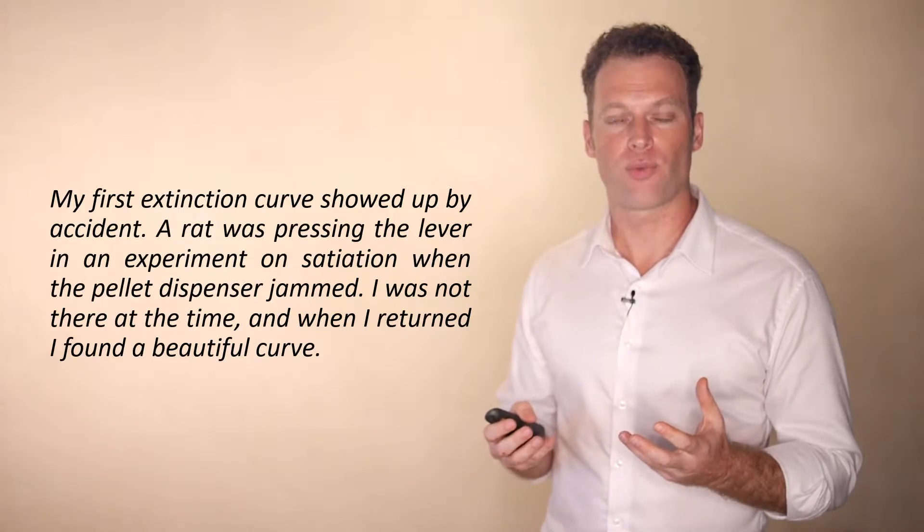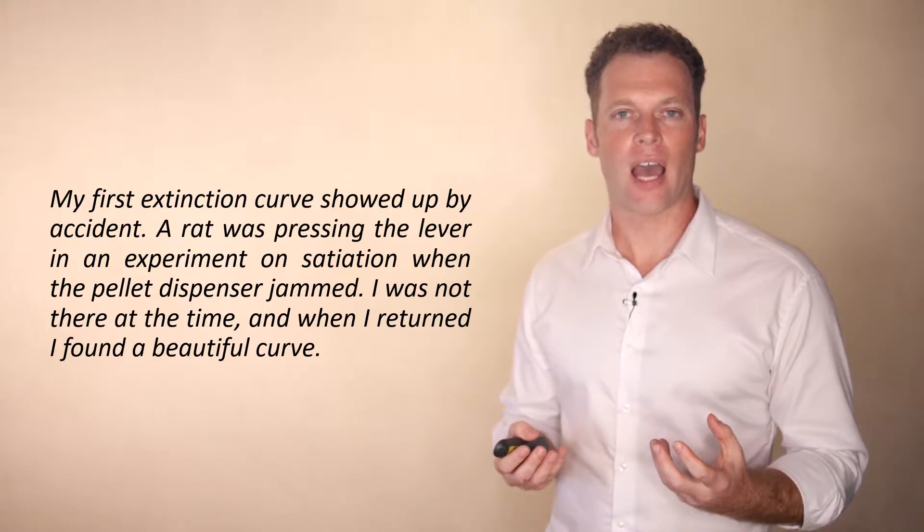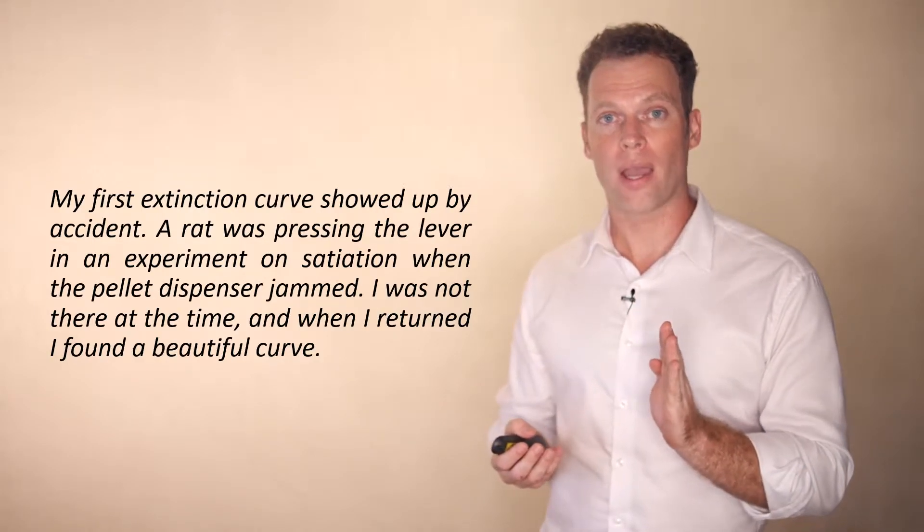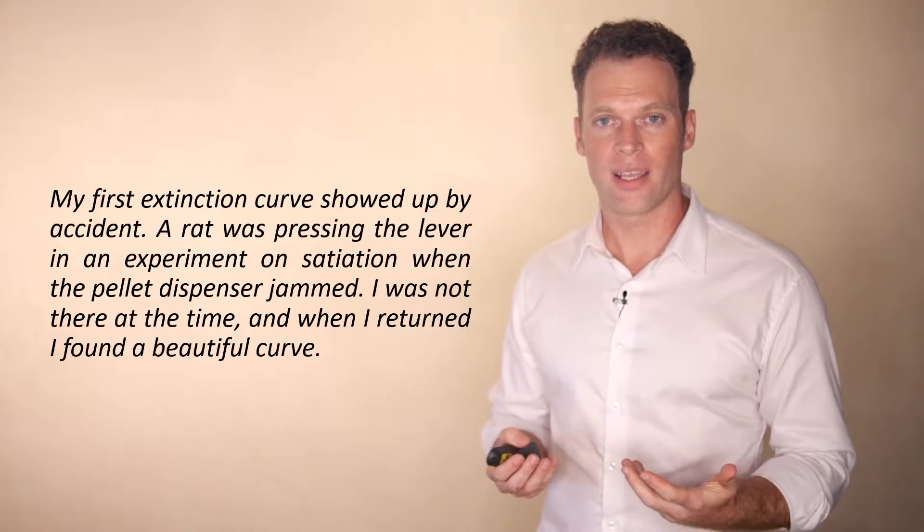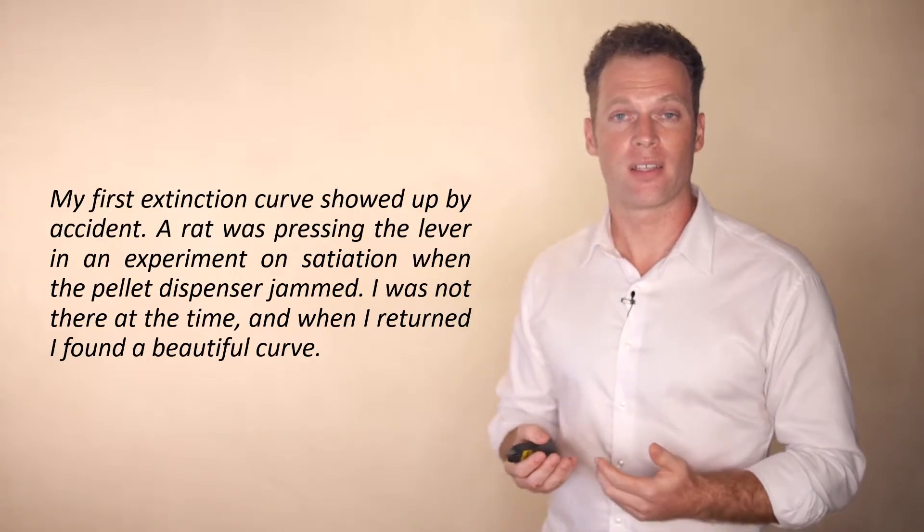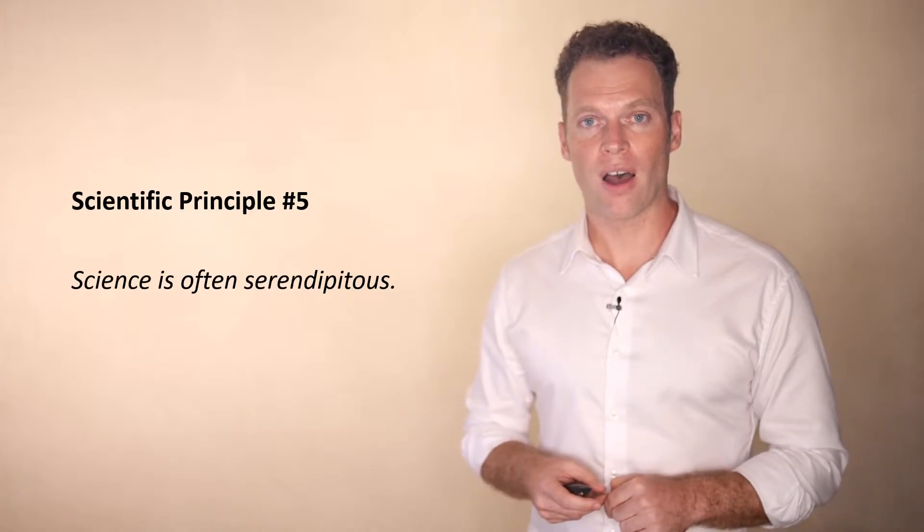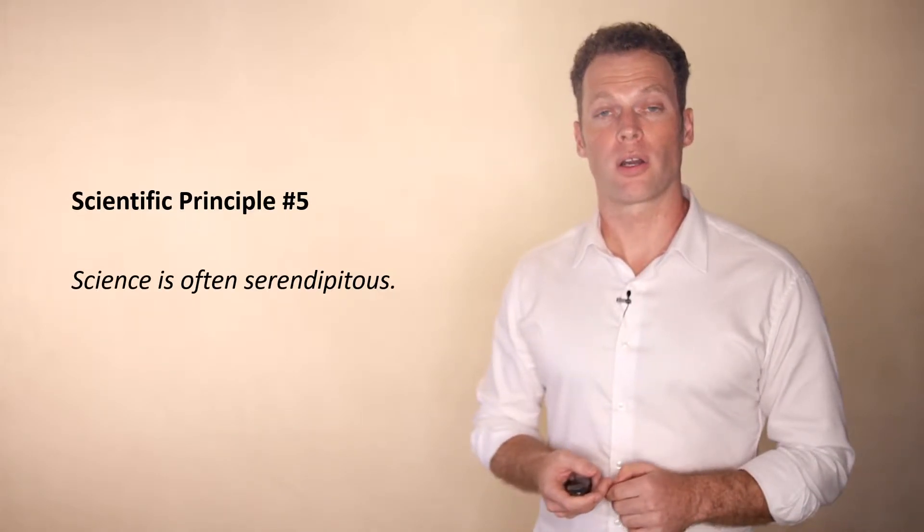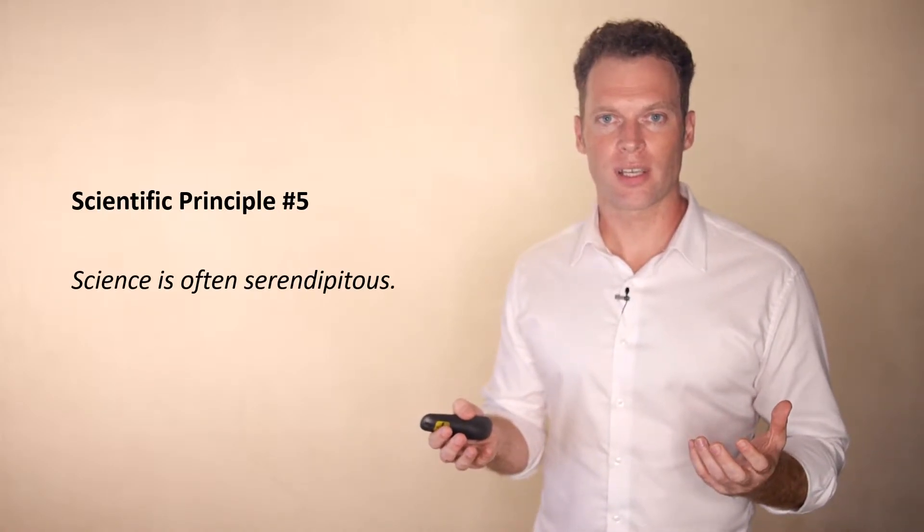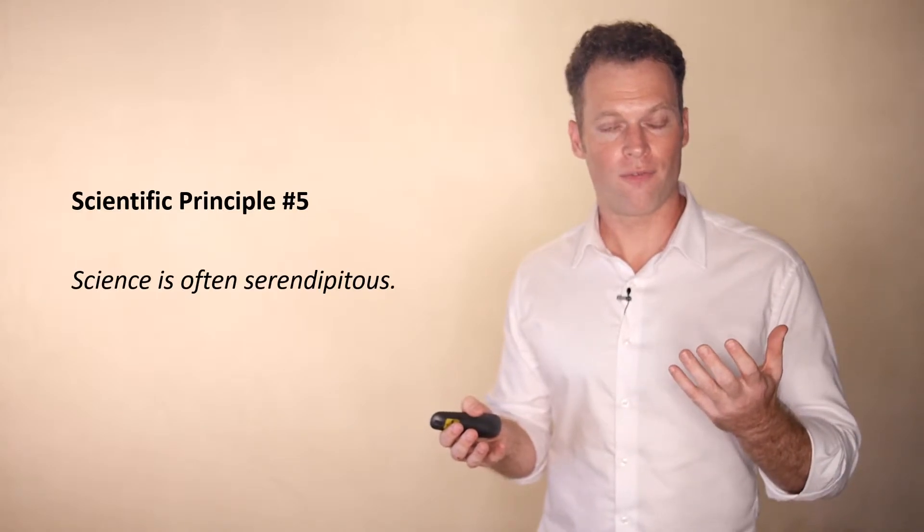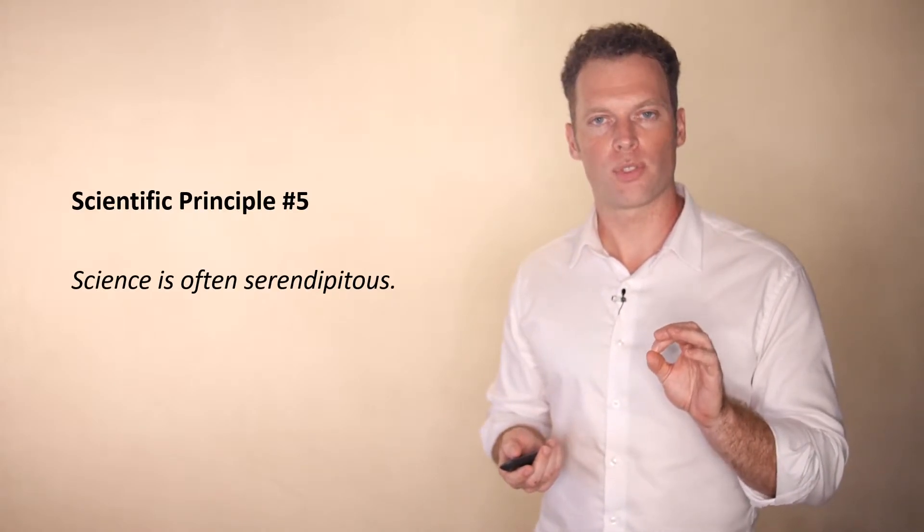And so what happened essentially is the rat lost that reward for its behavior. That reward was part of classical conditioning. And something that happens in classical conditioning, after the reward is taken away, slowly over time, the animal unlearns the behavior. And the rate at which that behavior is unlearned is an extinction curve. And he was able to observe this because by serendipity, which is scientific principle number five, the feeding mechanism broke, and the rat was no longer receiving that reward for its behavior. And this was a serendipitous discovery that this apparatus he had, when it failed to function as intended, created this nice discovery, and he had a very direct way of observing extinction curves.